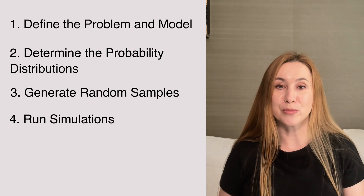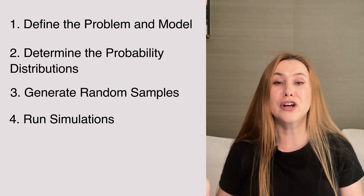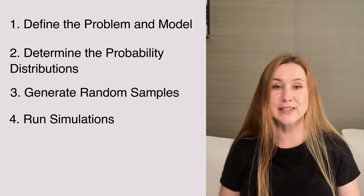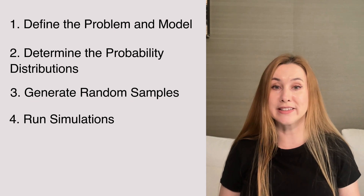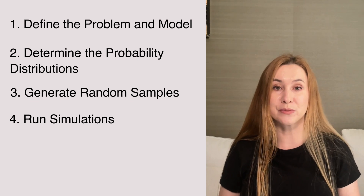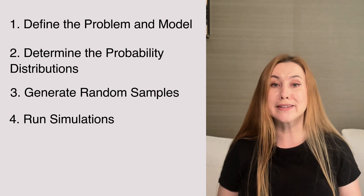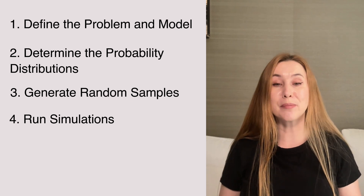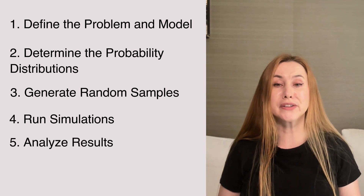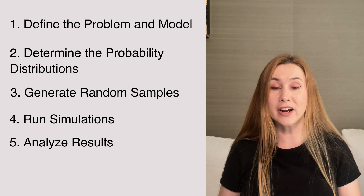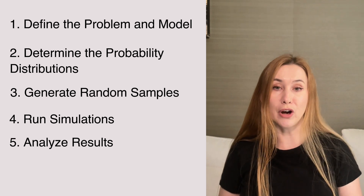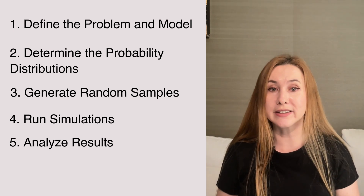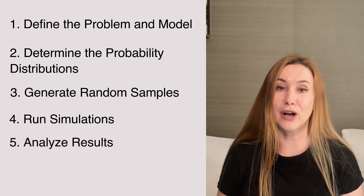The next step is to run simulations — a large number of iterations, each time using a different set of random values for the uncertain inputs. For each iteration, calculate the model's output using the sampled inputs. Next, analyze the results: collect the results of each simulation and analyze the distribution of output. This helps to understand the range, central tendency, and variability of possible outcomes.